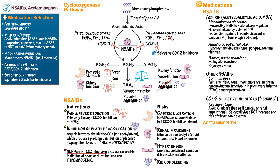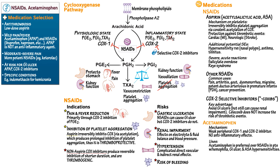Now let's look at acetaminophen. It is a weak peripheral COX-1 and COX-2 inhibitor with no anti-inflammatory effects. It's proposed that it acts via COX-3 inhibition in the central nervous system. It is therefore preferred over NSAIDs in patients with hemophilia, GI ulcer, and aspirin hypersensitivities, among other conditions. Regarding acetaminophen metabolism: if glutathione is depleted, NAPQI — a potentially toxic metabolic intermediary — binds to cellular proteins to form hepatotoxic metabolites.